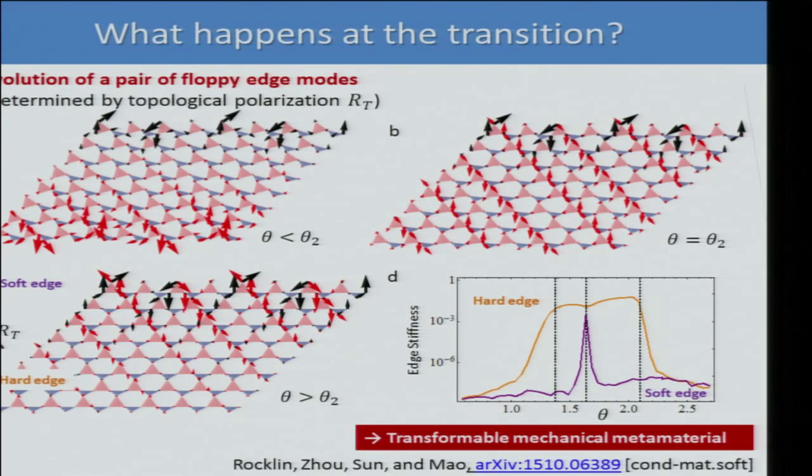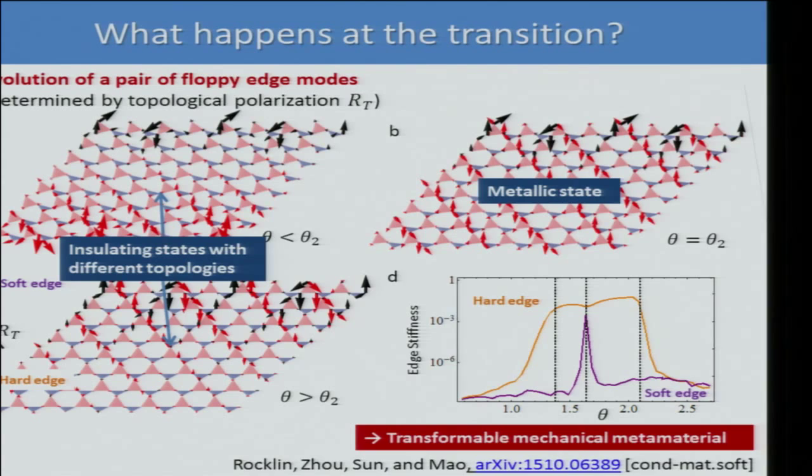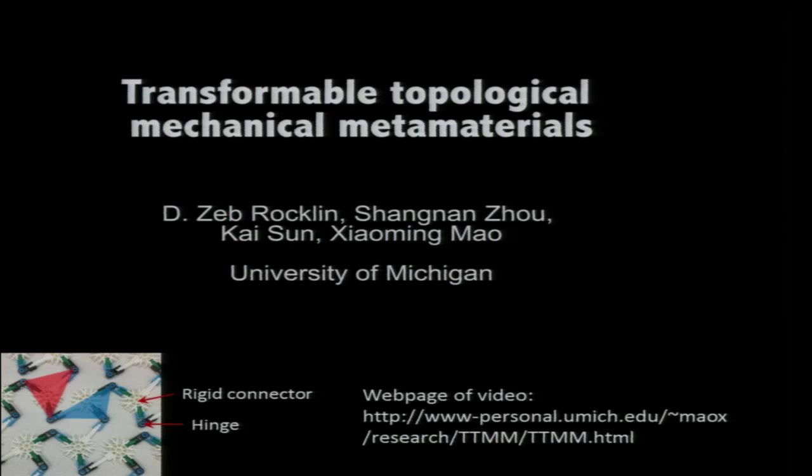There is an interesting analogy: the two states before and after the transition are like two insulating states with different topologies. In the middle, the state is analogous to a metal because it has floppy modes across the bulk — like a conducting state.